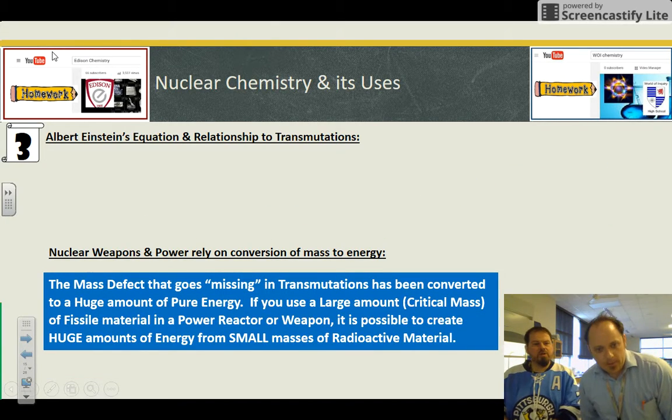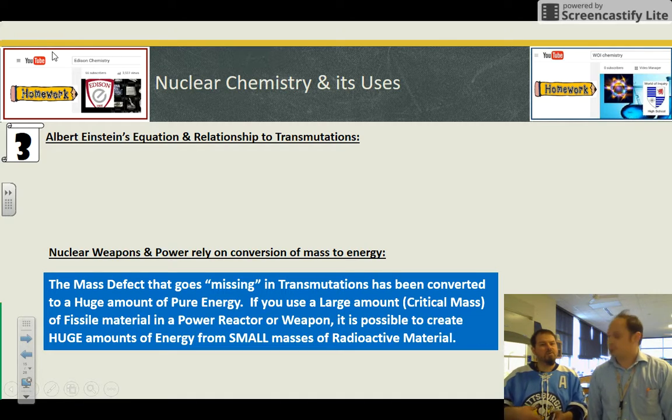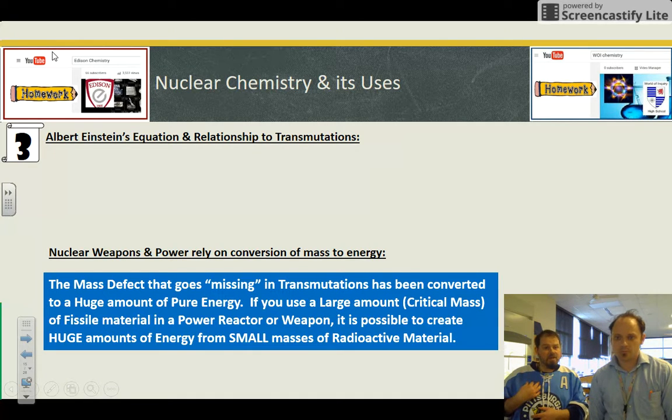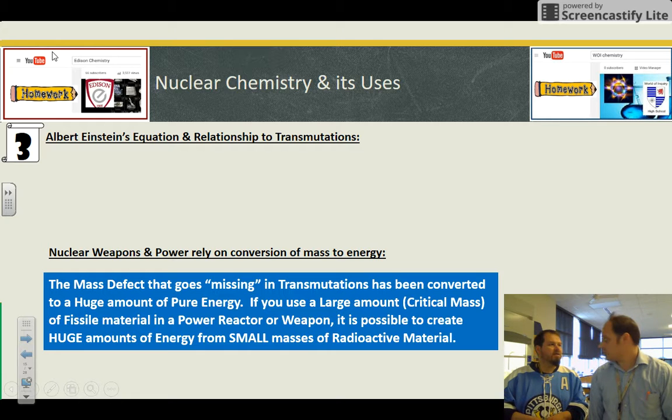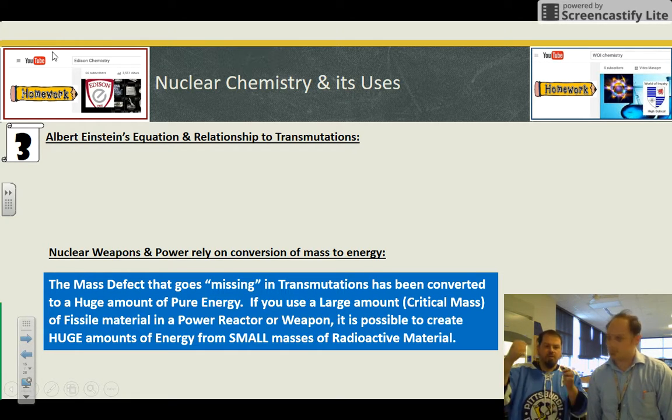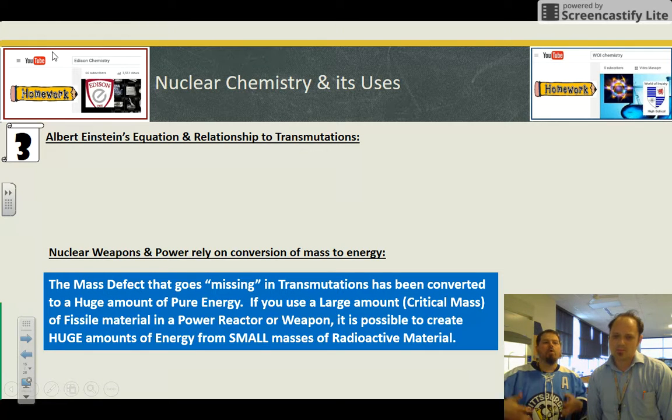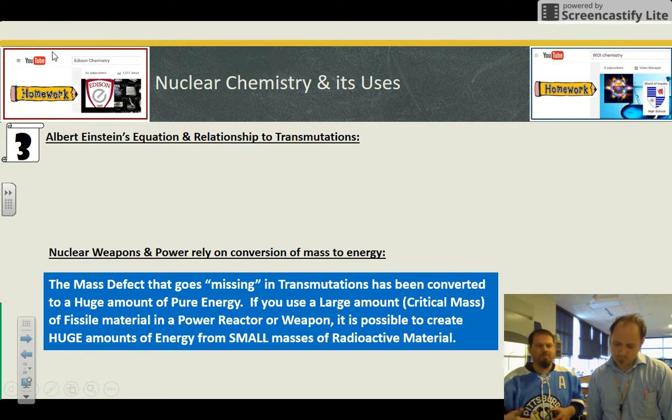Nuclear weapons and nuclear power. This is where the mass defect comes into play that we manipulate. This missing transmutation is converted into this energy. We harvest this energy, critical mass, fissile material. That is like a few kilograms. Now we're talking boom, or we're talking those rods that are going to heat up the water.